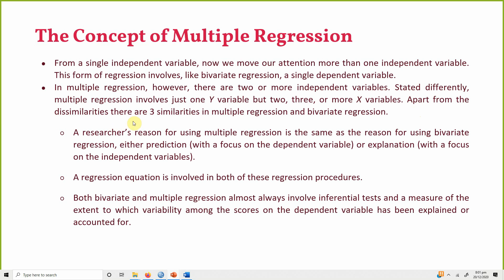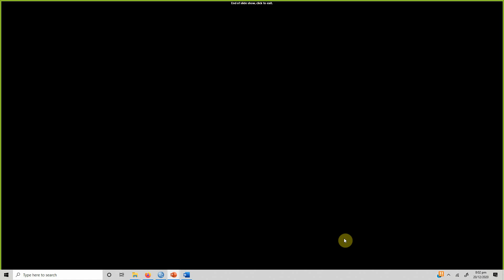Apart from the differences, there are three similarities between multiple and bivariate regression. A researcher's reason for using multiple regression is the same as for bivariate regression — prediction or explanation. A regression equation is involved in both, and both almost always involve inferential tests such as R values, correlation coefficients, and t-statistics.